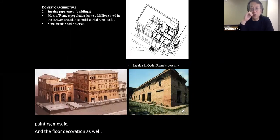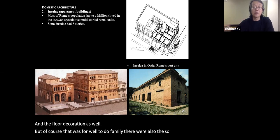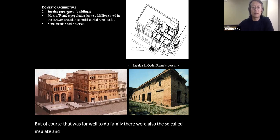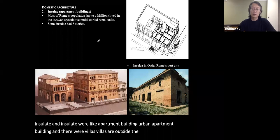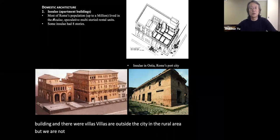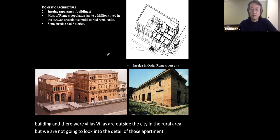Of course, that was for well-to-do families. There were also so-called insulae, which were urban apartment buildings, and villas outside the city in rural areas — but we are not going to look into the details of those.